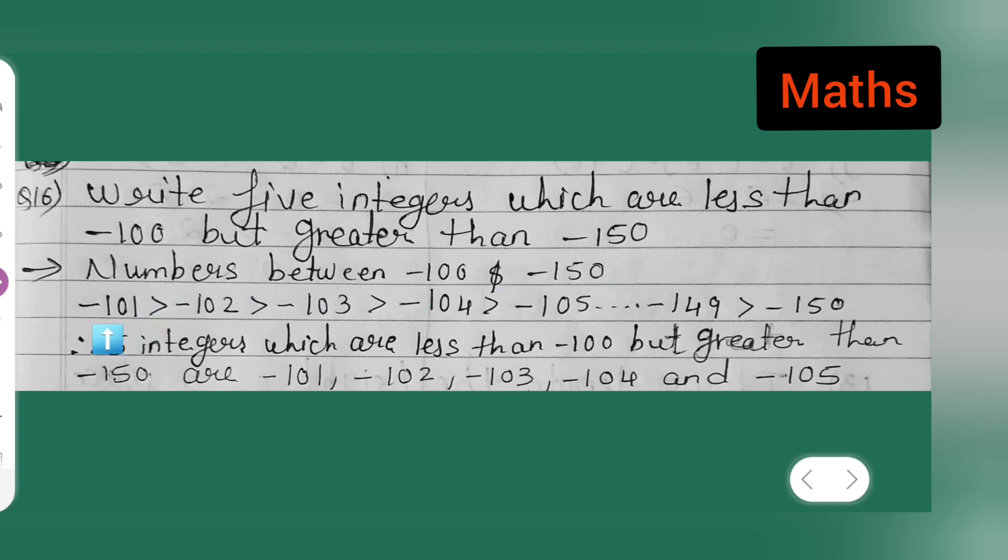Now, -101 is greater than -102, which is greater than -103, greater than -104, which is greater than -105, and so on. So it will reach up to -149, which is greater than -150.